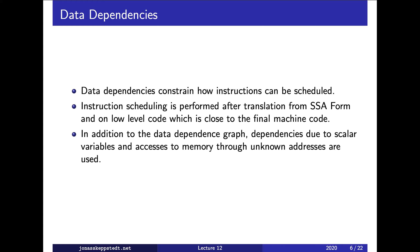In addition to the data dependence graph, we also create dependencies between instructions due to uses and definitions of scalar variables. Memory writes through unknown pointers or reads through unknown pointers create dependencies, and there we just say that memory is one resource. If we are certain that the read or write is to a specific variable we can be more specific, but we usually use one resource which denotes all unknown memory.